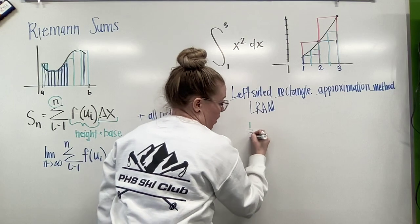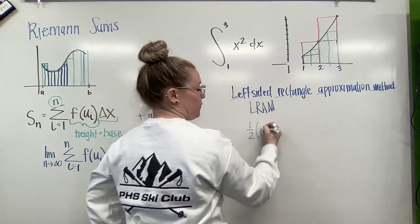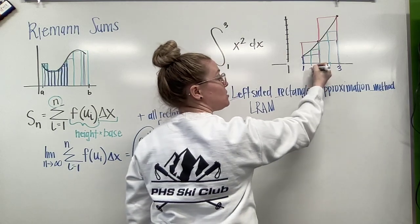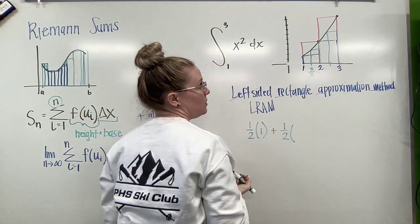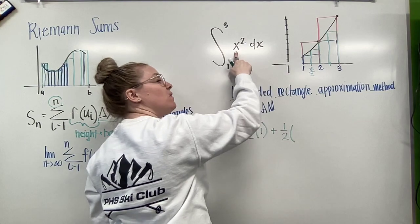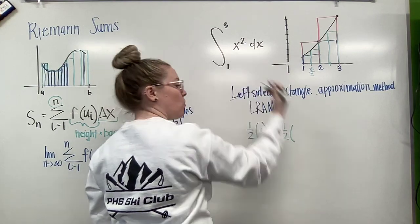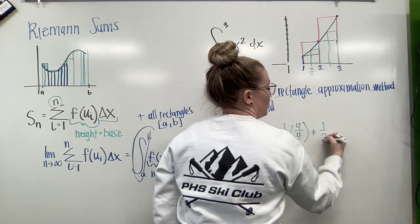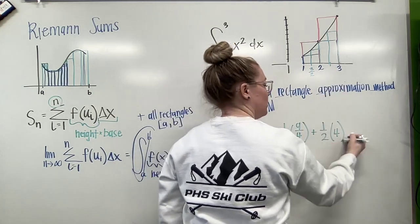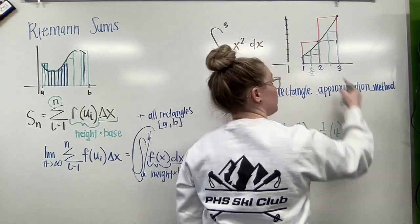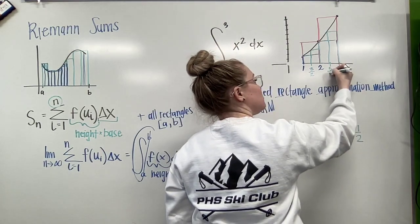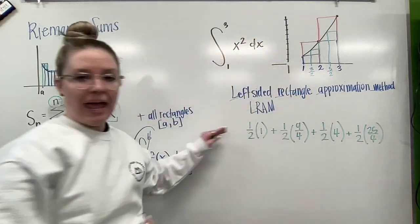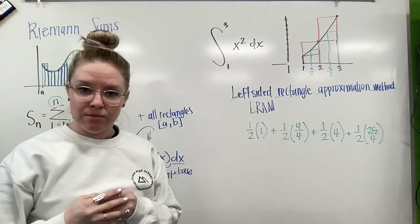Now our base is one half. My first height is one. My second height is based off of this three halves right here. So if I plug that into my function, three halves, if I square that, I'm going to get nine fourths. One half. Plug in two, I get my four. And one half, I'm going to plug in. This one is five halves. So I'm going to get 25 over four. And that's going to give me a more accurate estimation. Again, this is my L-RAM.